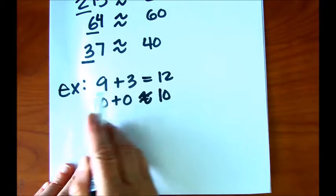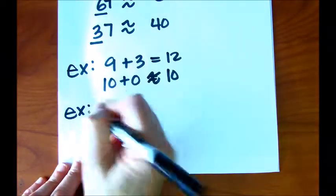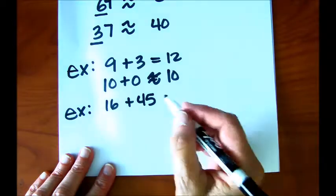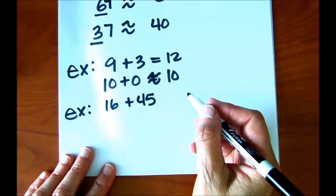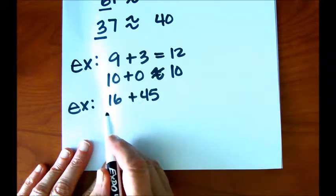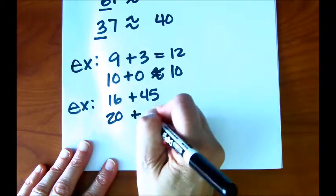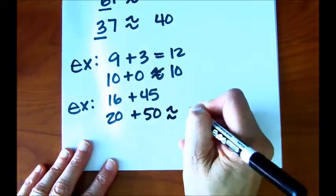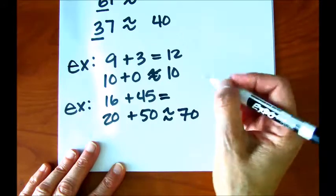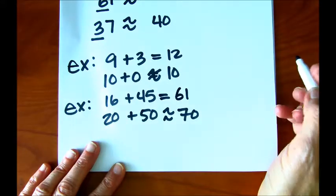Normally when it's easy like this, you'd probably just be better off doing the calculation. So let's do a harder problem. Let's say we have 16 plus 45. You might be able to figure this out in your head, but let's first estimate using front-end estimation. We're going to round 16 to 20, and 5 and above — give it a shove — so 45 gets rounded to 50. Our answer is approximately 70. And if we do the calculation: 5 plus 6 is 11, carry the 1, that's 6, so 61. It's kind of close.